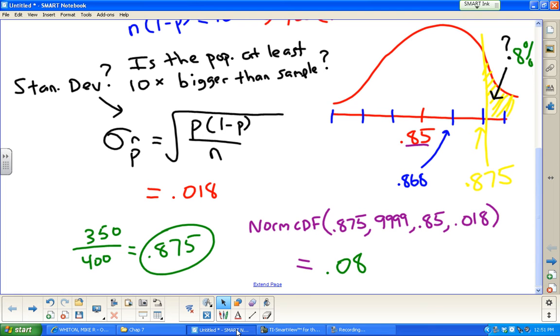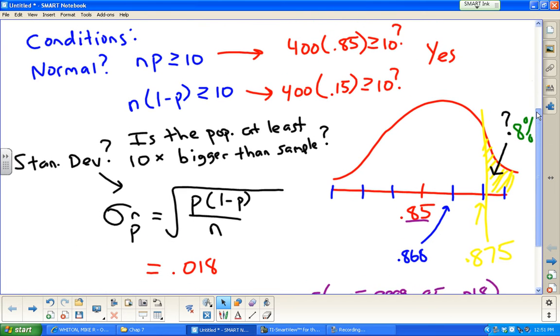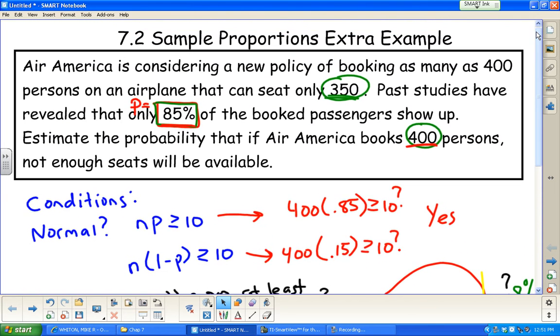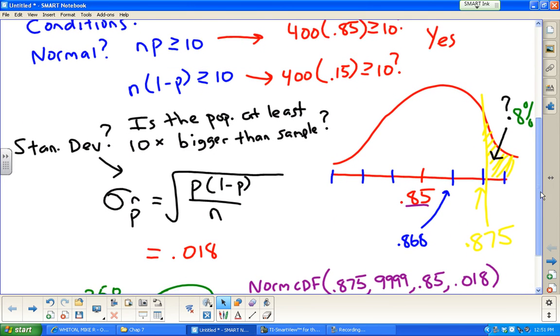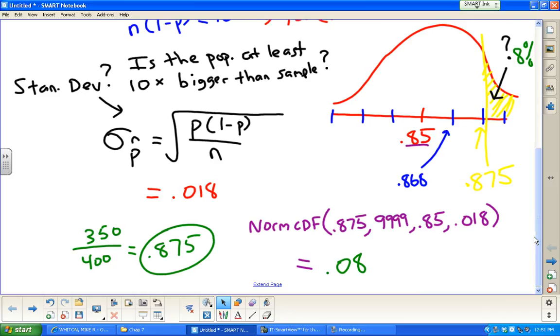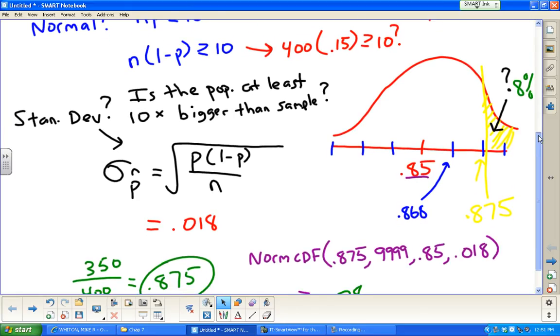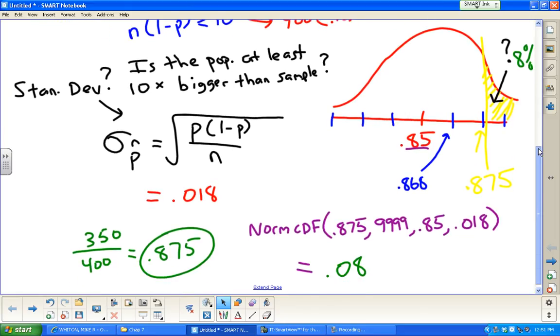One last thing. You might be asking, couldn't we have done this problem from the very beginning as a binomial problem? You actually can and get an exact answer. The issue is, probably before the calculators were so useful, doing a whole bunch of binomial calculations and adding them all up manually was really difficult. Using this normal approximation is a lot simpler and a lot quicker. It's a very similar problem that we could have done back in Chapter 6, but this is a more common way to do it, using a normal approximation.